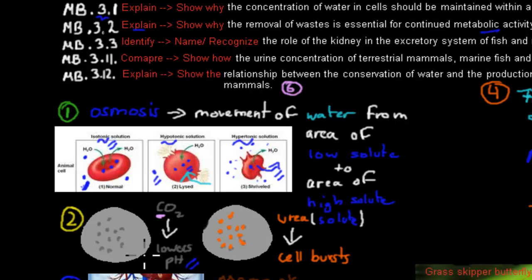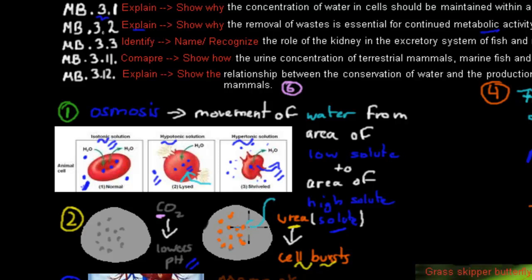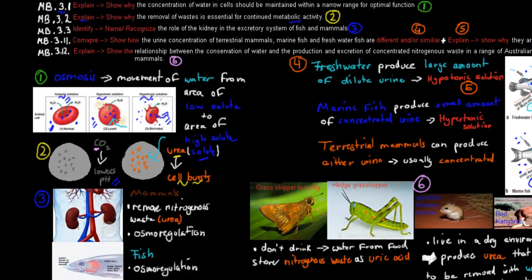That's why we have to remove carbon dioxide. Another waste is urea. When urea builds up, it will cause the cell to burst. The reason is that urea is a solute — if we have lots of solute in the cell, there will be more solute inside than outside, so water will travel from outside to inside, causing the cell to burst. Obviously if it bursts, that's not ideal for normal function either.